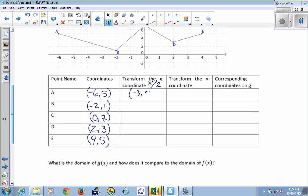So I'm going to change all my points by dividing the x-coordinates by 2. So I've got negative 3, 5, negative 1, 1. 0 divided by 2 is still 0, so 0, 7. 2 divided by 2 is 1. Y-coordinate is not changing at all right now. I'm just changing the x's. And then 4, 5 becomes 2, 5. So I divided all the x's by 2.